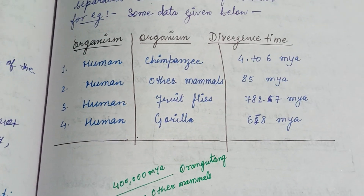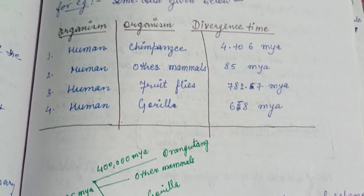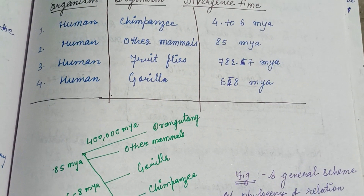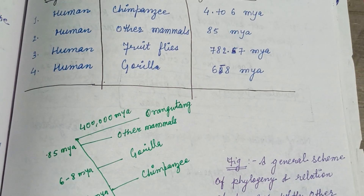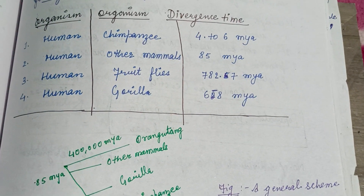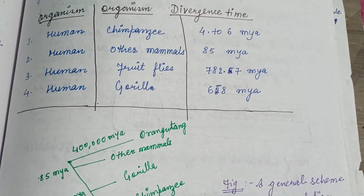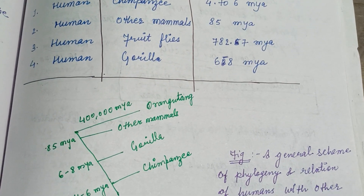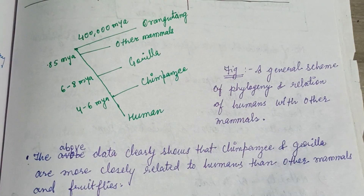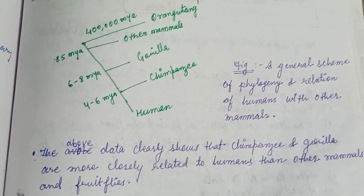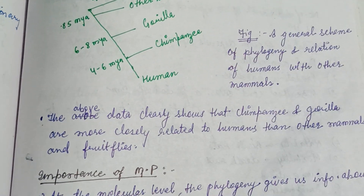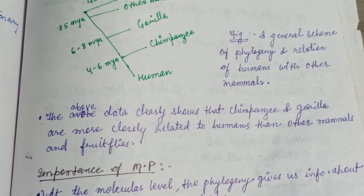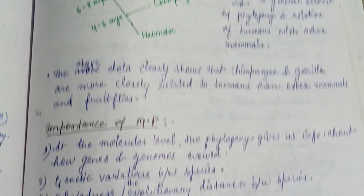As an example, the comparison of closeness between humans and other organisms such as chimpanzees, other mammals, fruit flies, and gorillas shows divergence times of 4 to 6 million years ago, 85 million years ago, 782.7 million years ago, and 6 to 8 million years ago respectively. This data clearly shows that chimpanzees and gorillas are more closely related to humans than other mammals and fruit flies.